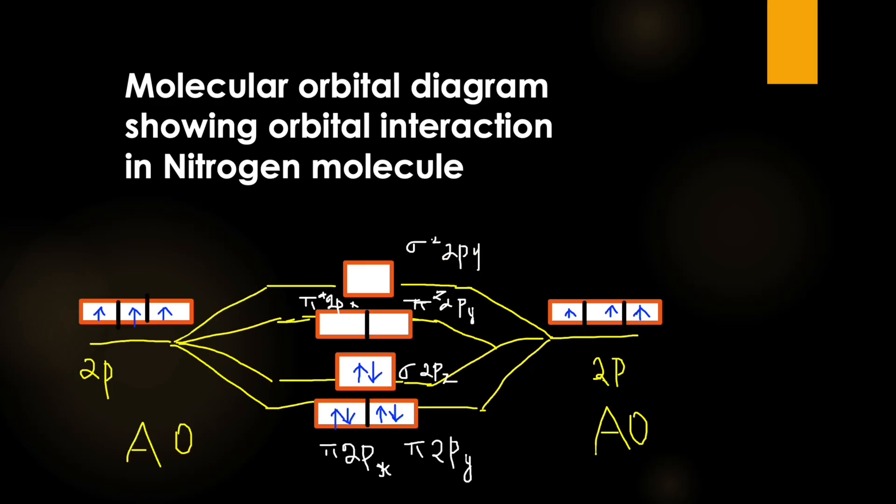So if you look at this molecular orbital diagram, you can see that sigma 2pz orbital is just above that pi 2px and pi 2py. This is because that sigma 2pz orbital energy is increased due to sp mixing.